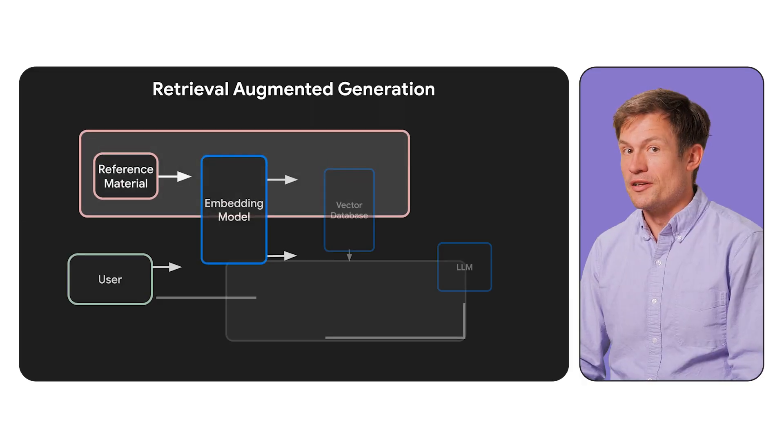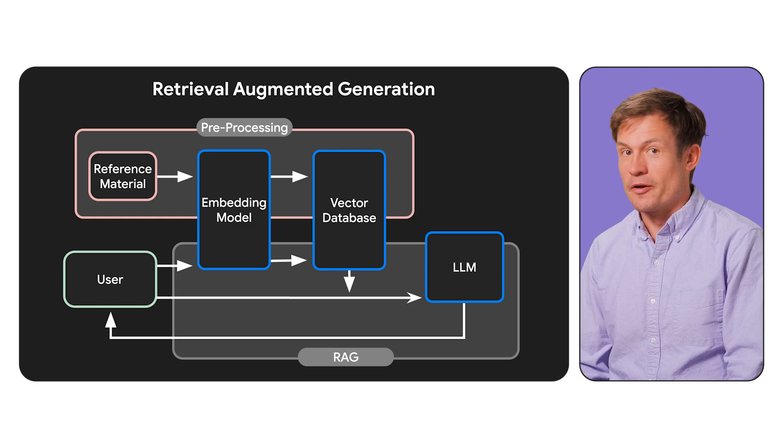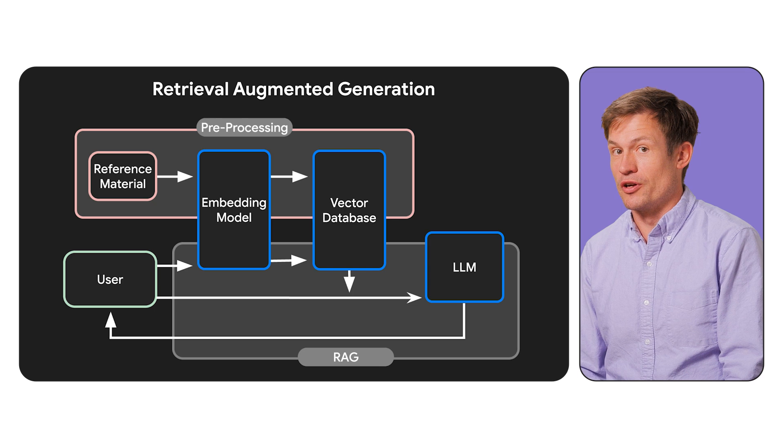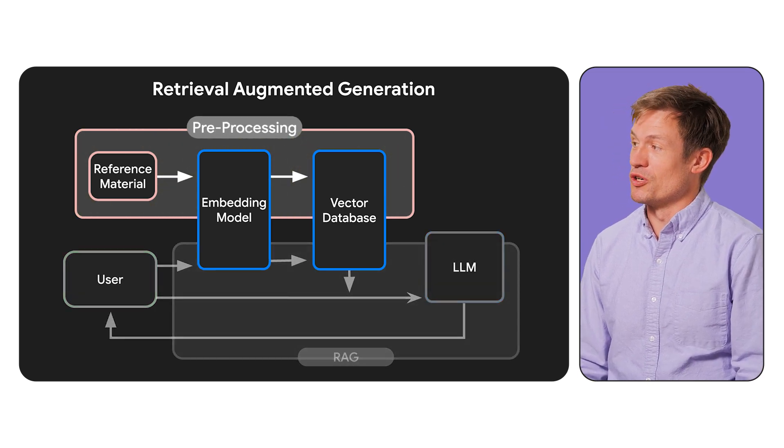Because context is so critical to response quality, many advanced RAG techniques focus on improving the context included with the user's prompt. So to make it easier to follow along today, we'll cover these techniques based on the stage of the RAG information flow they are used at, and we're going to start with pre-processing.